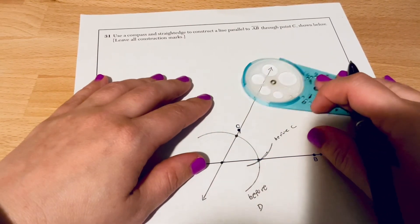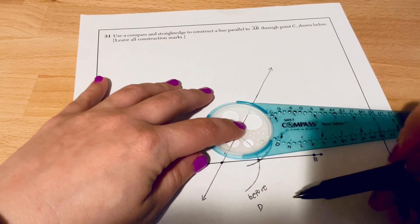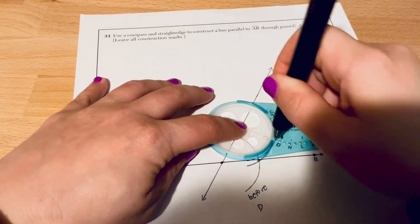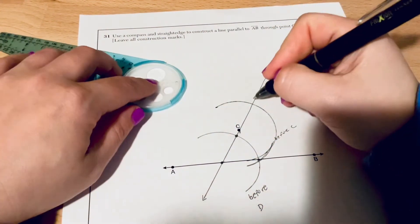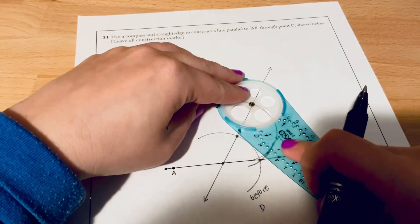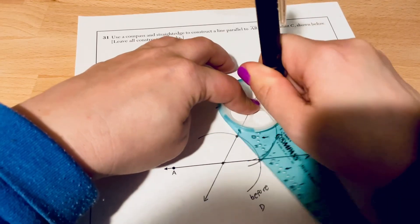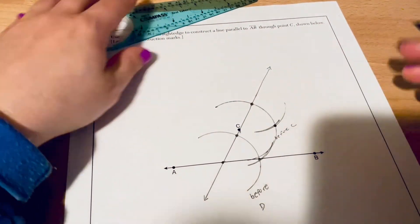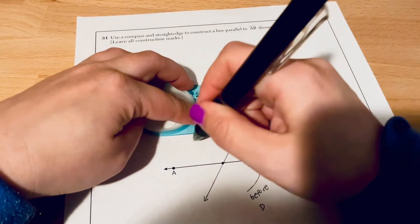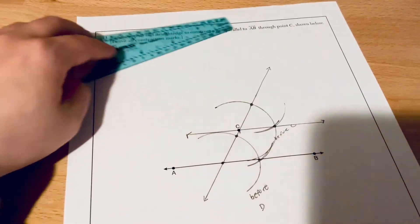Now we're going to repeat the process. We are going to put the gold piece on point C. And I'm going to use the two arcs that we already did. So the first one I did was the one before D. I'm going to make a nice big arc, big enough so that it crosses the transversal. Put the gold piece on there. Now use the hole that's before C. Where those two meet, connect with point C using a straight edge.